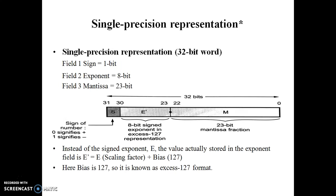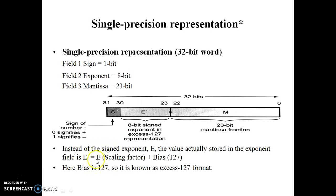Now, single precision representation. You can see the structure of single precision representation — a 32-bit word. The first bit is the sign bit S. Next is E dash, the exponent field, which is 8 bits. The rest of the bits are called mantissa, which is 23 bits. E dash is not only the exponent bit — E dash equals exponent plus bias. In single precision, the bias is 127, and it is always fixed. So E plus 127 equals E dash.